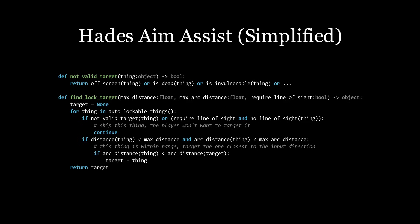For targets which pass, the game selects the target whose direction is closest to the player's input direction, and whose distance to the player, and arc distance to the player's input direction, falls below some threshold.